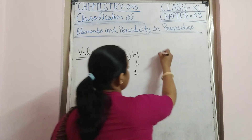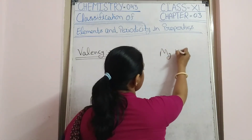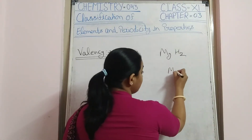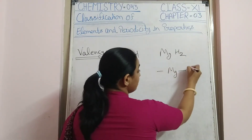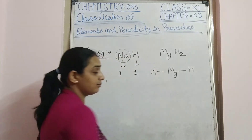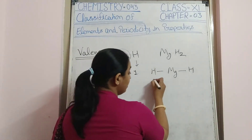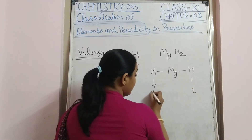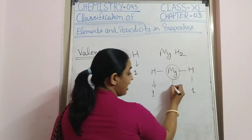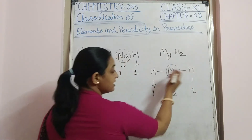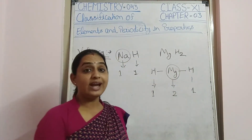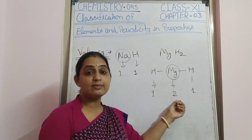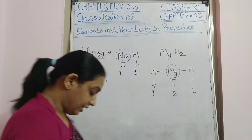The next example is MgH₂. One magnesium atom attaches with two hydrogen atoms. Since hydrogen has valency one, magnesium must have valency two — meaning two atoms combine with magnesium.